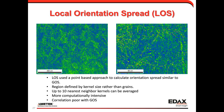To bridge the gap, rather than a whole-grain calculation or a small kernel, we can do Local Orientation Spread — similar to Grain Orientation Spread but using a local kernel instead of a grain-based approach. We can define the kernel size up to 10 nearest neighbors; it's a little more computationally intensive but gives an idea of local plastic orientation spread in the material. We see it's a little more homogeneous on both left and right than the KAM maps showed.